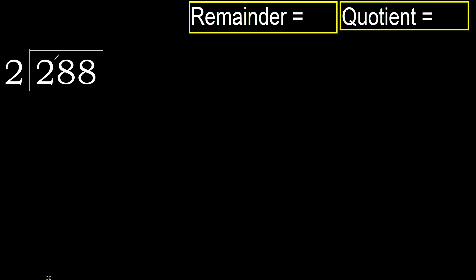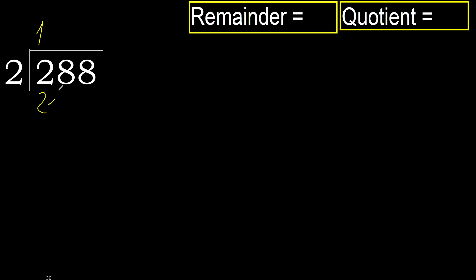288 divided by 2. 2 is not less, therefore with 2: 2 multiplied by which number is nearest but not greater? 2 multiplied by 2 is 4, which is greater. Multiplied by 1 is 2, which is not greater. Subtract.